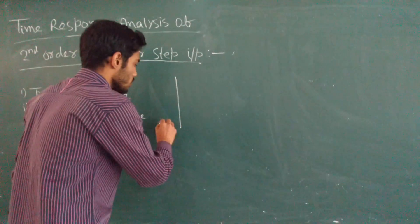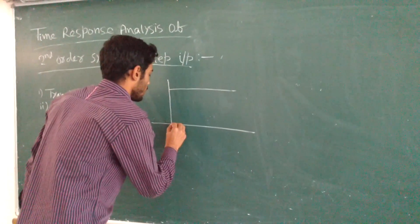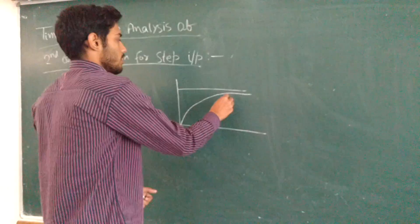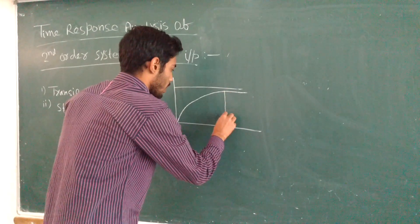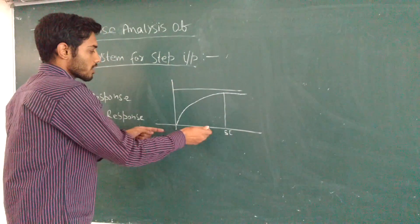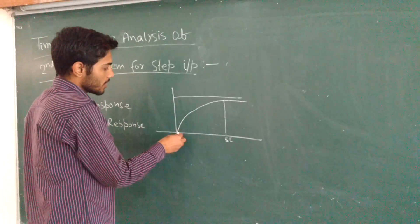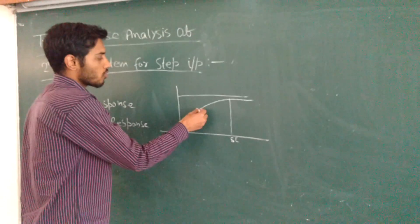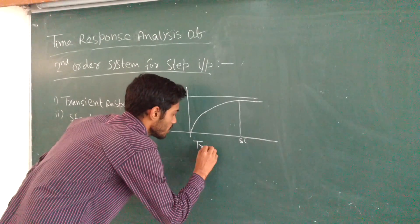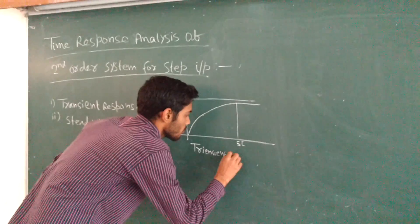If we draw the response of any system, if we see from this part — in general this is 5 tau, this is the settling time. For this period of response, we see the response of output changes with respect to time. This is the part of transient response.